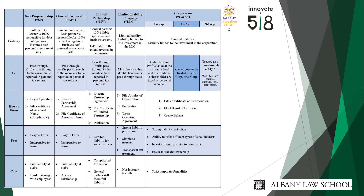Both sole proprietorships and general partnerships expose individual owners to full liability, and profits are passed through to the owners of both entity types. Limited partnerships have one general partner and at least one limited partner designated in the partnership agreement. The general partner is fully liable for 100% of the business debts, while limited partners only risk losing the capital they've invested in the company. Profits secured in the operation of a limited partnership face pass-through tax treatment.